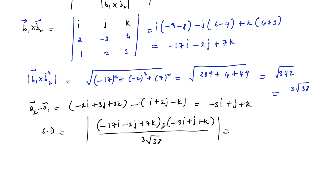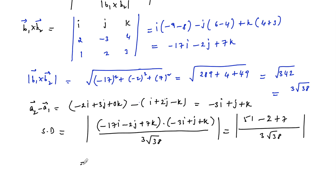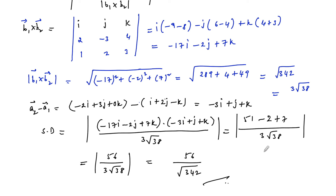Computing the dot product: (−17)(−3) + (−2)(1) + (7)(1) = 51 − 2 + 7 = 56. So the shortest distance is 56 / (3√38), or equivalently 56 / √342. This is the shortest distance between the two given skew lines.